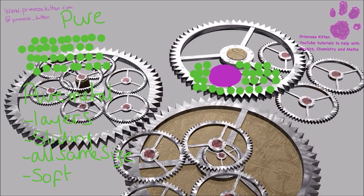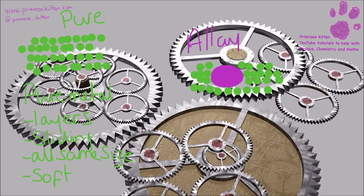Now in an alloy, we have this different bit in the middle here — this big purple blob — something that's not the same size. Which means these layers, well they can't really move anywhere. This one can slide, but these ones are kind of fixed, stuck in place because there's no layers for them to really move around in. So an alloy has no layers, so there's going to be no sliding because the atoms, the particles are different sizes.